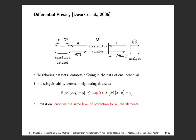Let's begin with a well-known formal notion of privacy called differential privacy, that allows a trustworthy data curator in possession of sensitive data from several individuals to approximately answer a set of queries submitted by an analyst while maintaining individual privacy. Here, the dataset is denoted by X, query by Q, and the privacy mechanism by M. A differentially private mechanism does not distinguish between neighboring datasets when answering a query.